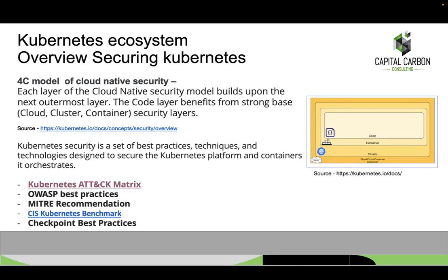Now let's talk about security. If you are new to the Kubernetes security ecosystem, I would refer you to the 4C model of cloud-native security, which is available on the Kubernetes documentation page. Each layer of the cloud-native security model builds upon the next outermost layer. The layers are Code, Container, Cluster, and Cloud or corporate data center. Each layer has its own security controls, and the code layer benefits from a strong base of cloud, cluster, and container security layers.